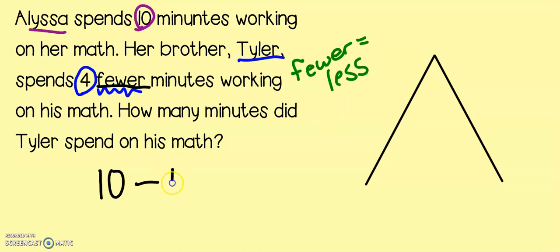So, he spends four fewer minutes. So, we need to find out how many minutes he did his math for. Let's look at our equation. What's the trick? Who always comes first when we subtract? The king. You are right. So, let's put our king up at the top.